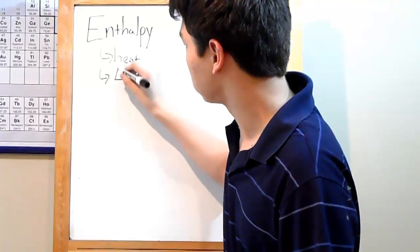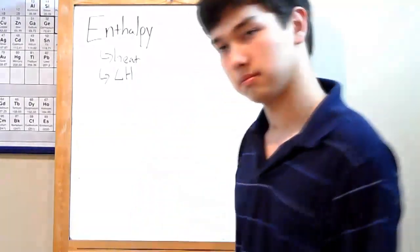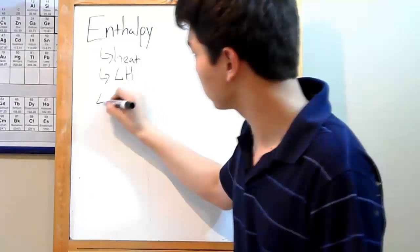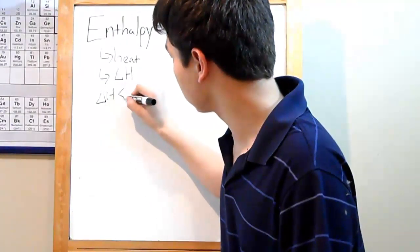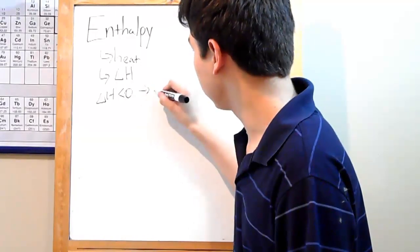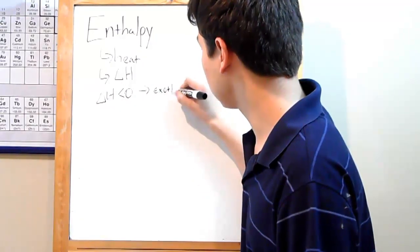It's noted by the symbol delta H. If your enthalpy is less than zero, your reaction is exothermic. That means heat is released.